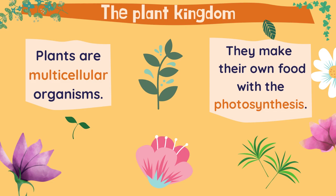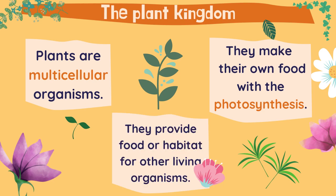The plant kingdom. Plants are multicellular organisms. They can make their own food with photosynthesis. They also provide food or habitat for other living organisms. Many animals feed on living things from the plant kingdom, such as plants and vegetables for humans. They also provide habitat for living things such as insects in the flowers or birds that have their nests in the trees.